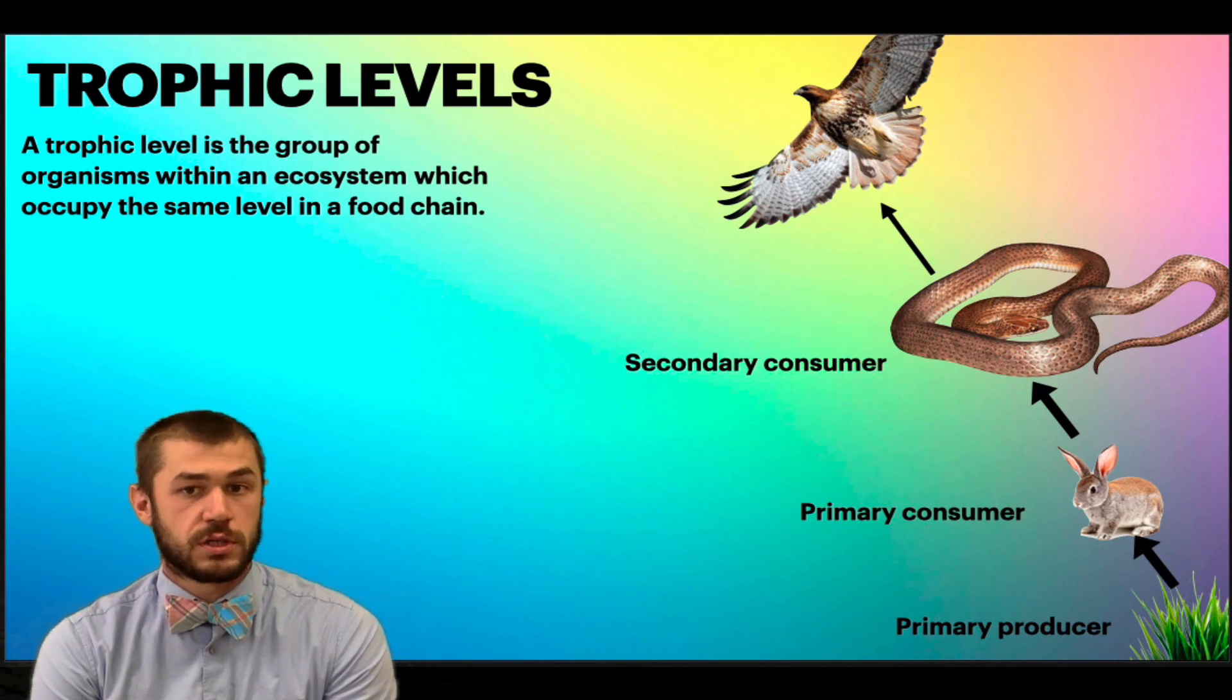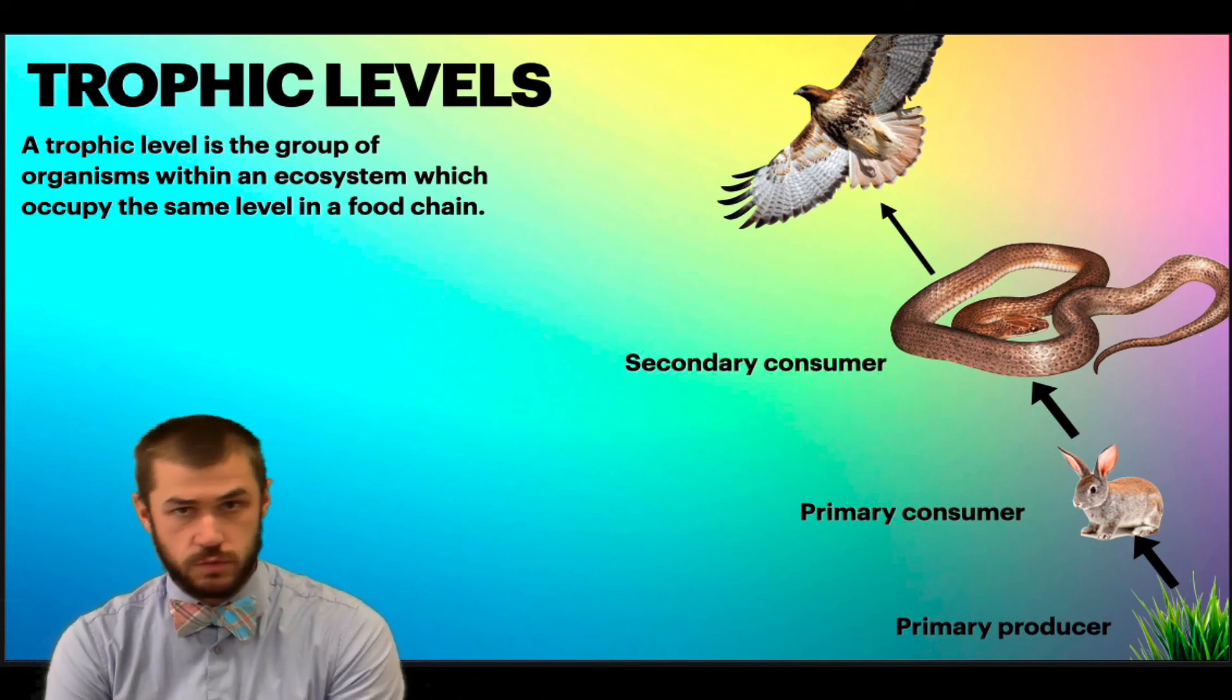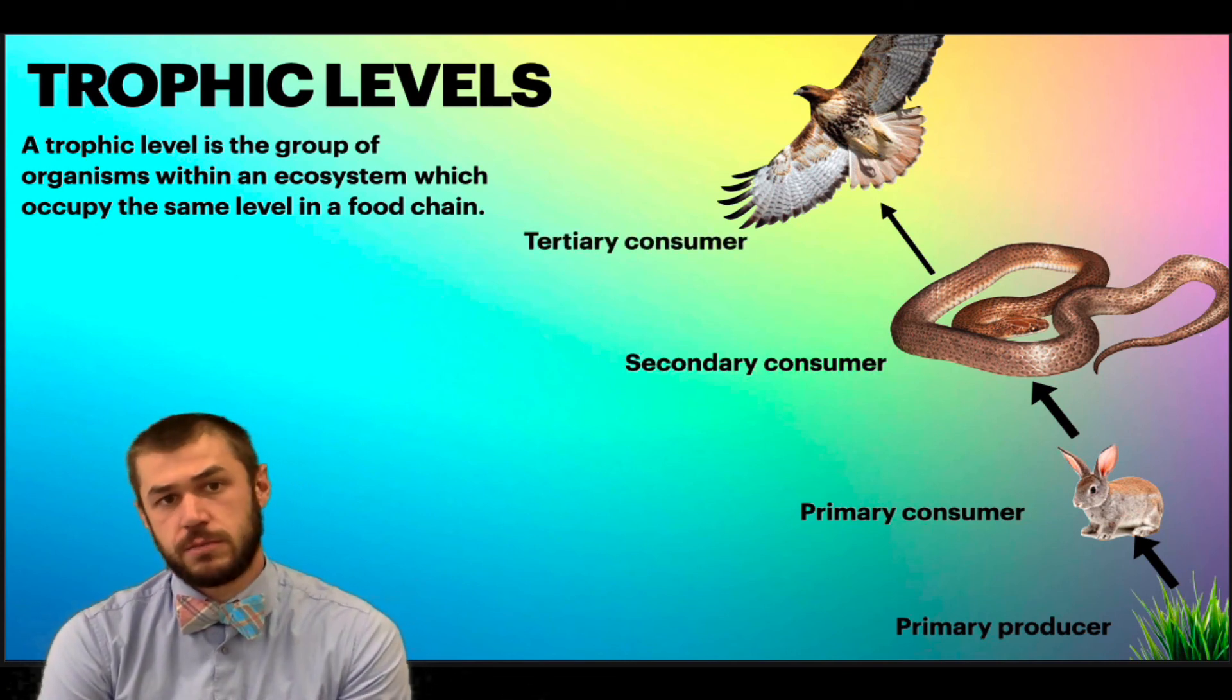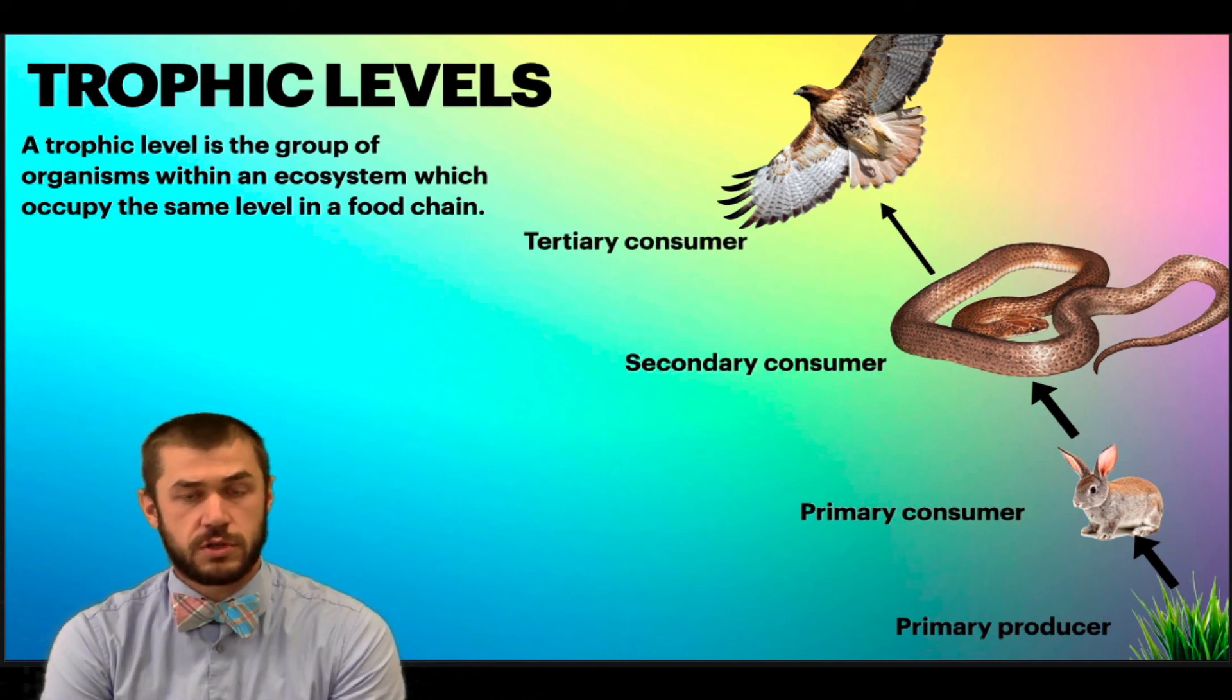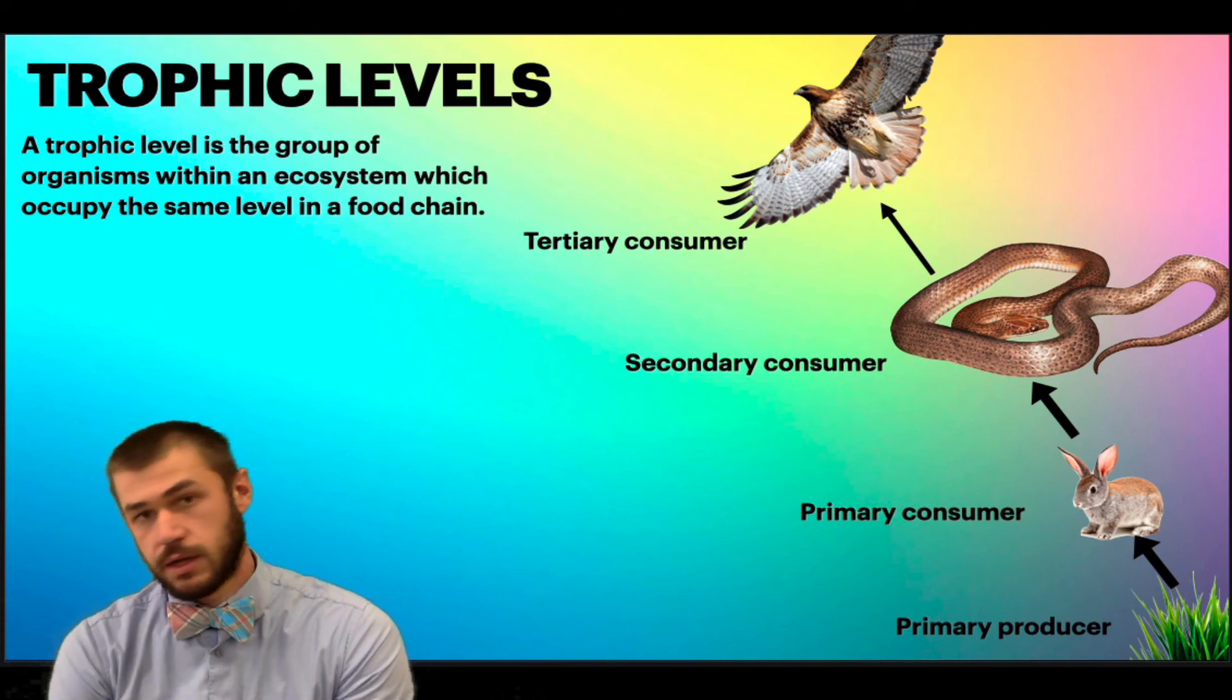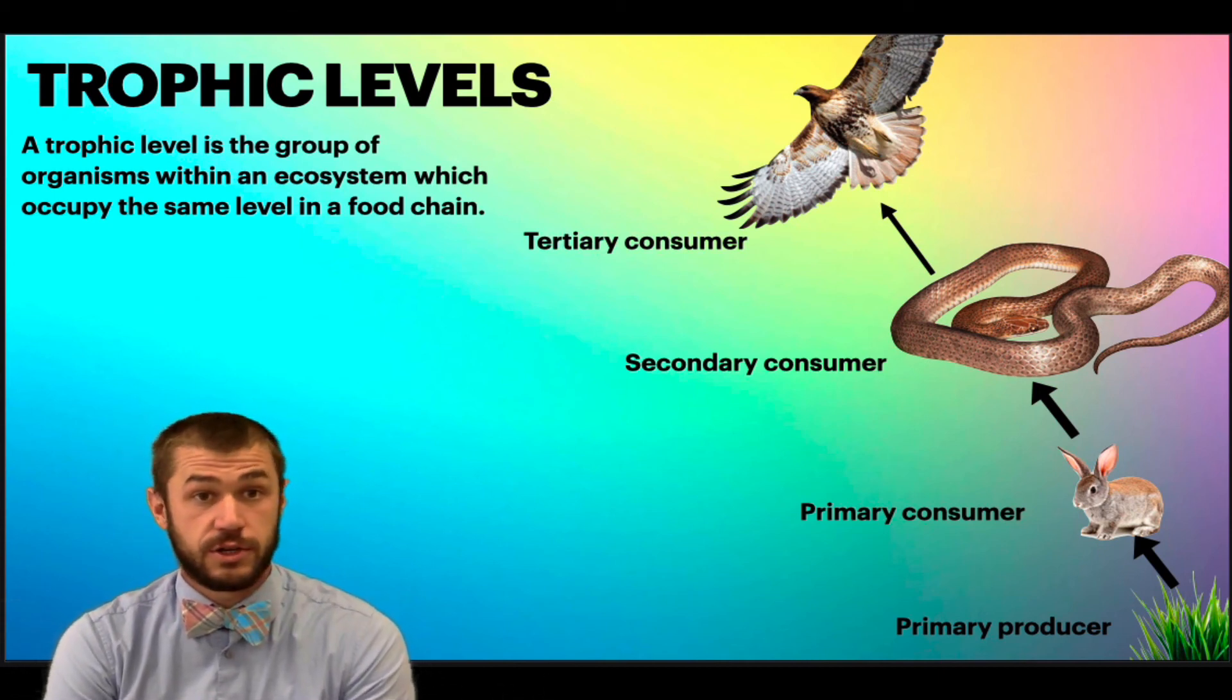Secondary consumers are going to consume those primary consumers. So the snake that eats the rabbit is an example of a secondary consumer. And similarly, tertiary consumers are that fourth level, and they're going to be eating the secondary consumers.